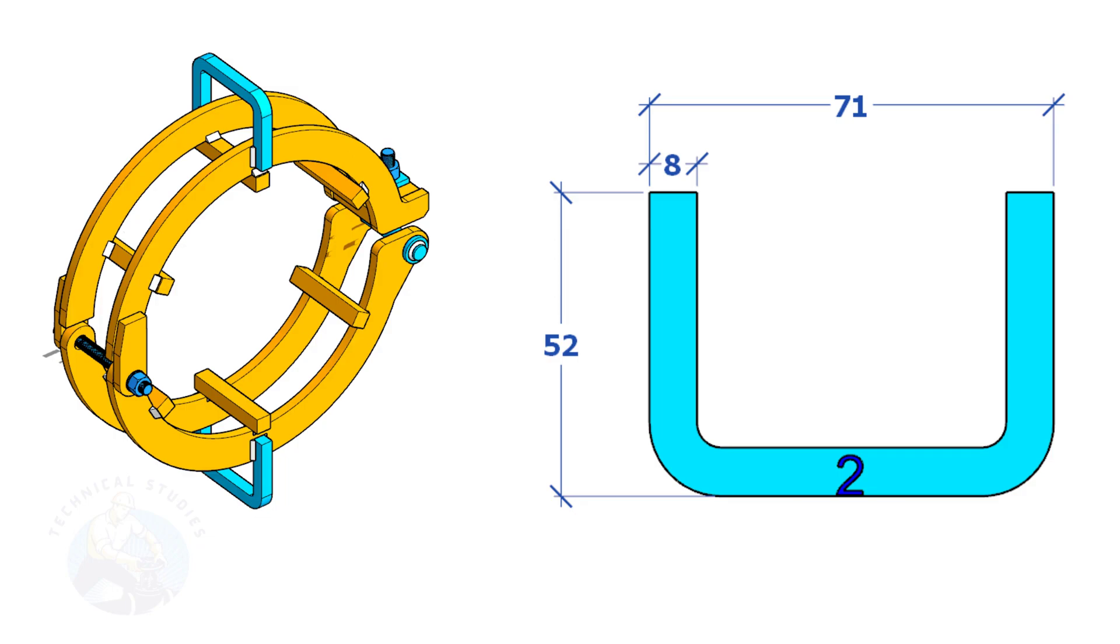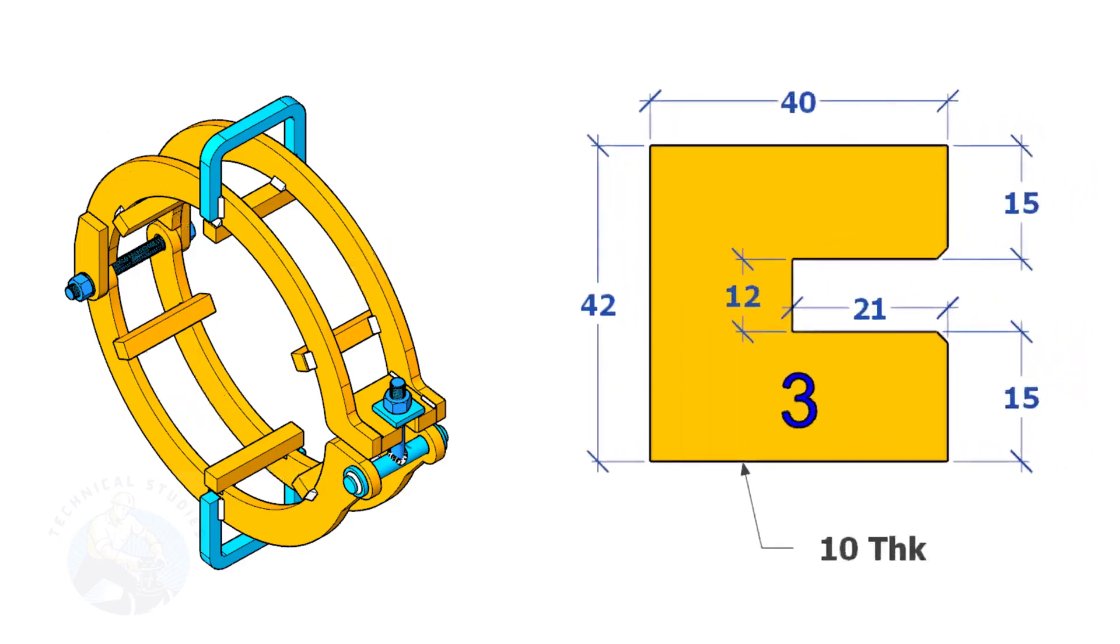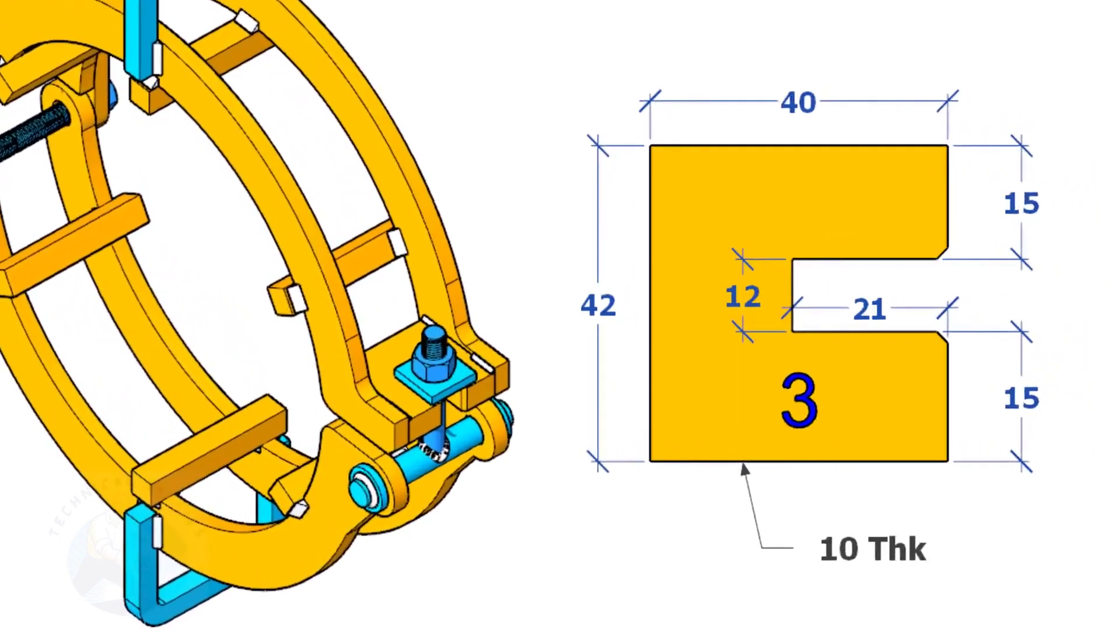For item number two, you can use square bar, round bar, or whatever material suitable for a handle. The size shall be 6 millimeters to 10 millimeters. Up to 6-inch clamps, one handle is enough. Item number three sits here.